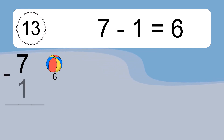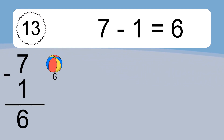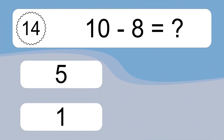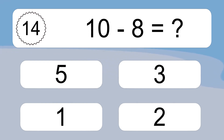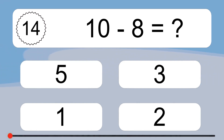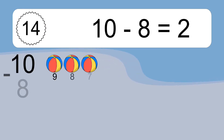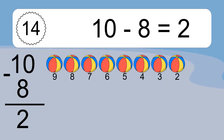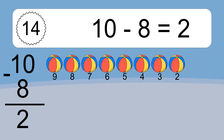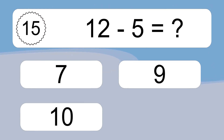7 minus 1 equals what? 7 minus 1 equals 6. Let's count it. 6. 10 minus 8 equals what? 10 minus 8 equals 2. Let's count it. 9, 8, 7, 6, 5, 4, 3, 2.